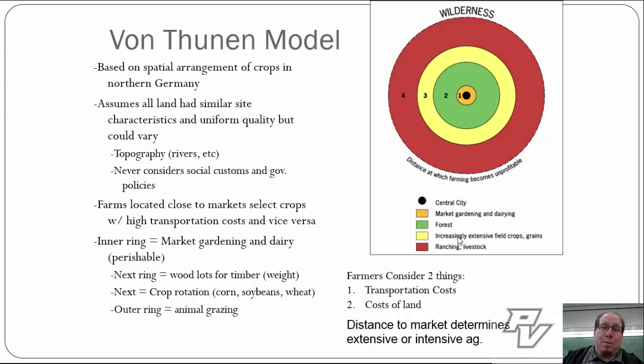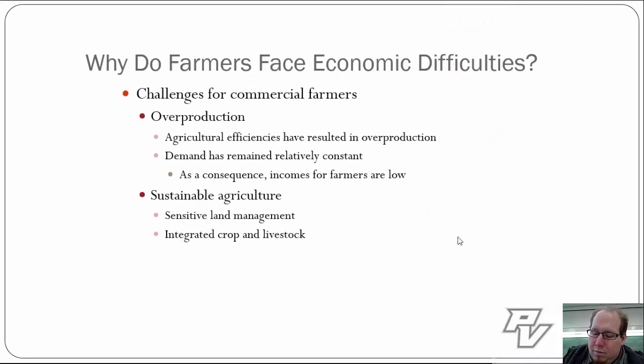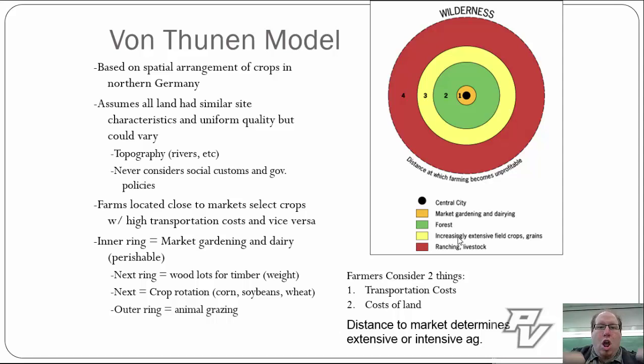Remember, farmers are going to consider two things when transporting goods — and this will be the same when we get to industry. They're considering transportation costs and they're considering the cost of the land. Keep those things in mind as we continue. Von Thunen is key — I cannot emphasize this enough. You must know this model.